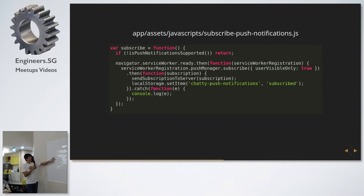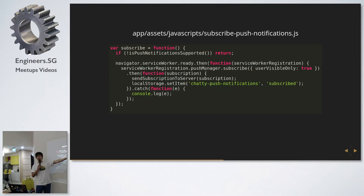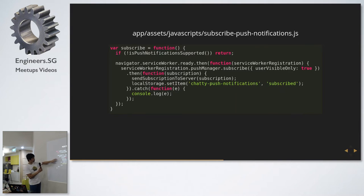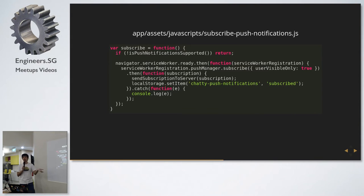The subscribe function is basically: you fetch your service worker registration, then call push manager and subscribe. There's an option, userVisibleOnly: true, which means for this registration you expect something to show when you receive a push message — if nothing shows, it will throw an error. Once you have the subscription object, you send it to the server. I also use local storage to store the state of whether the user wants push notifications on or not, so the next time you reload the page you're in the right state.